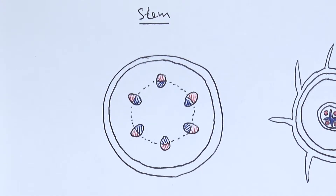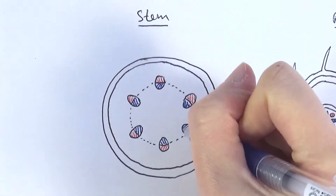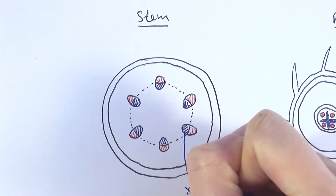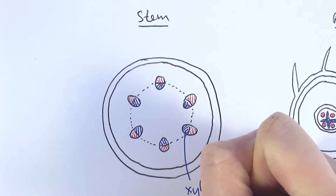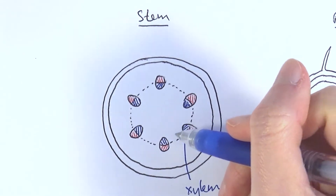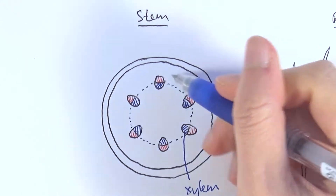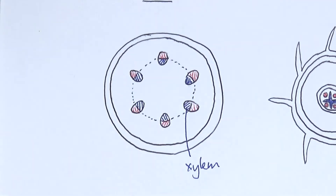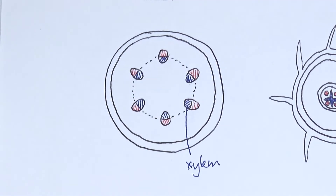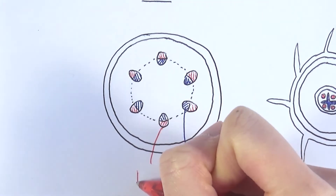For the stem, if we cut the stem open and look at the cross-section, you will see this sort of structure. The xylem and the phloem are organized in bundles, so we call them the vascular bundles, and you can see that the vascular bundles are in a sort of ring shape structure. The xylem would be on the inner side of the vascular bundle whereas the phloem will be on the outside of that.